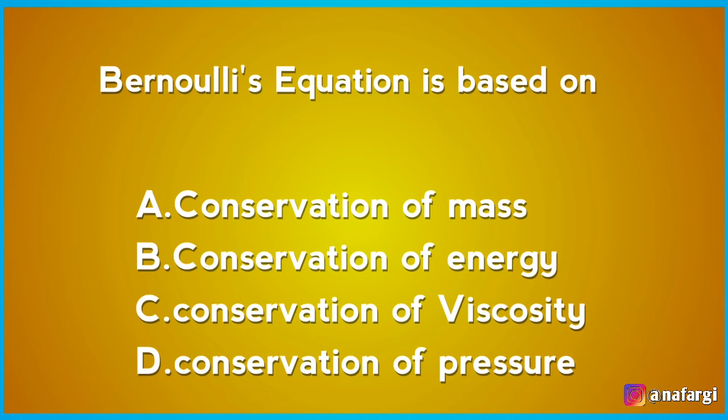Bernoulli's equation is based on: A conservation of mass, B conservation of energy, C conservation of viscosity, D conservation of pressure. It is not conservation of pressure or viscosity. The correct answer is B: conservation of energy. In general, the total pressure along a streamline is constant — static plus dynamic pressure.